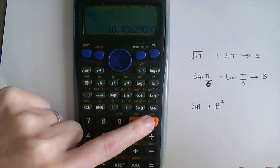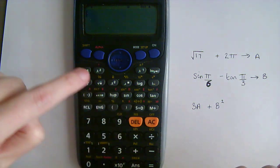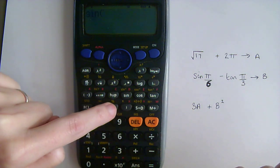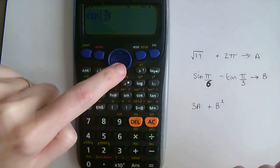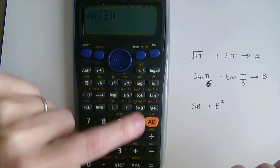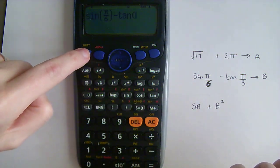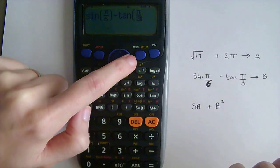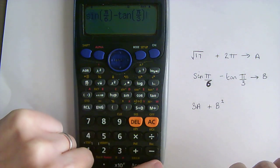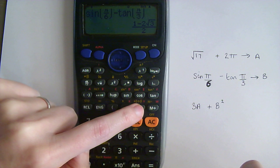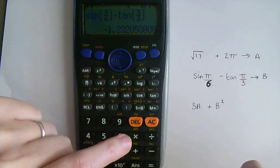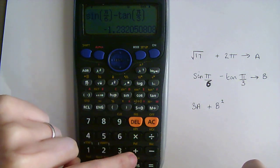So I'm then going to do sine of π over 6, minus tan of π over 3, which in this case is a third, but is also that minus 1.23 number. So again,